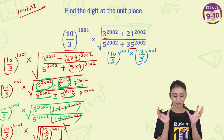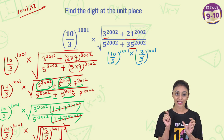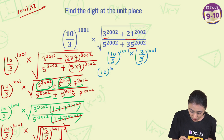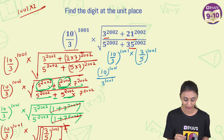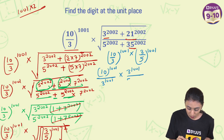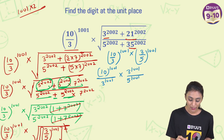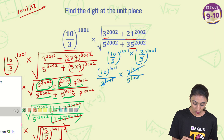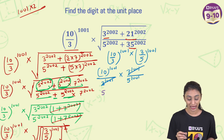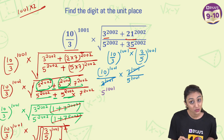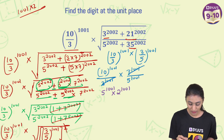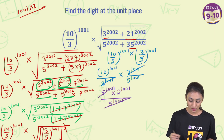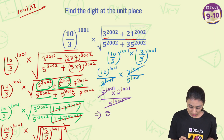So we have (10/3) to the power 1001 times (3/5) to the power 1001. Splitting this up: 10 to the power 1001 upon 3 to the power 1001, times 3 to the power 1001 upon 5 to the power 1001. The 3 to the power 1001 terms cancel out. Now 10 can be written as 5 times 2, so we have 5 to the power 1001 times 2 to the power 1001 upon 5 to the power 1001. The 5 to the power 1001 cancels, leaving us with 2 to the power 1001.